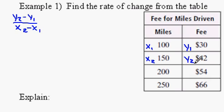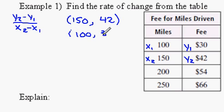So, we want to set up the ordered pairs with the x2, y2 first. So, it's going to be 150 comma 42, and then 100 comma 30.